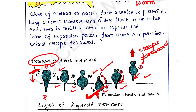This is the alternate contraction and expansion that helps the body to move. Contraction starts from the anterior end, passes toward the posterior end; then expansion starts at the anterior end and passes to the posterior end. Because of this contraction and expansion, the shape of the body changes and Euglena moves forward.